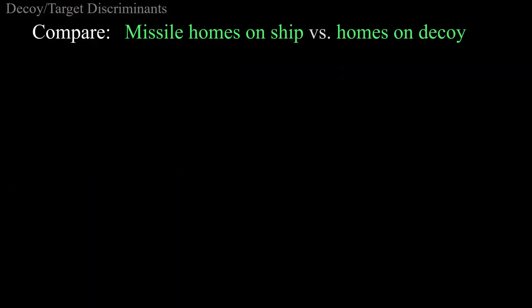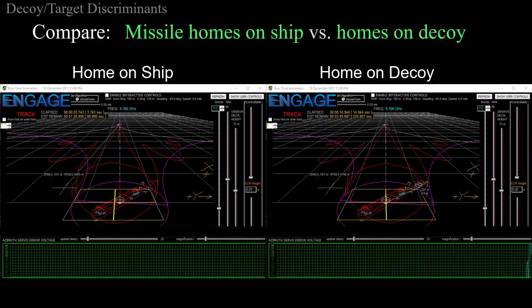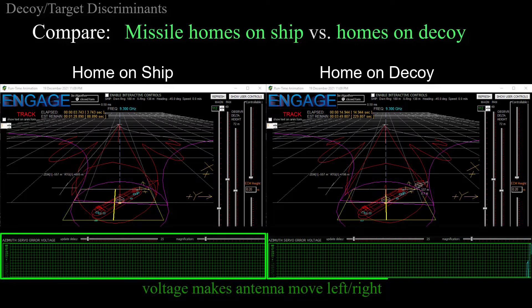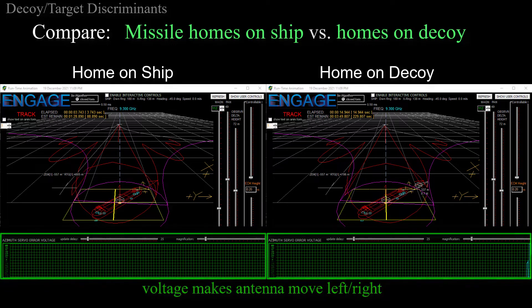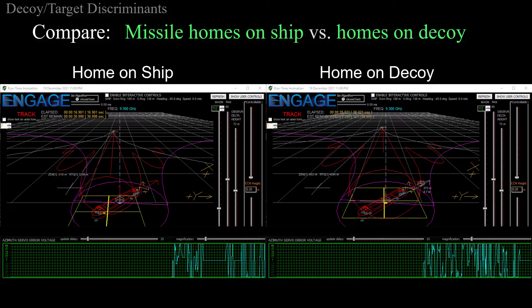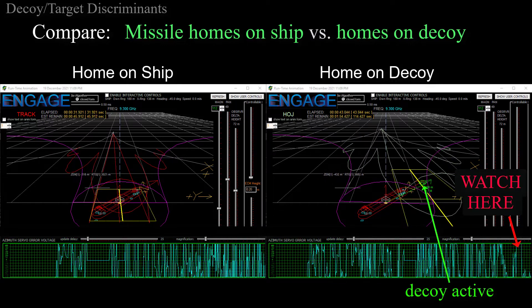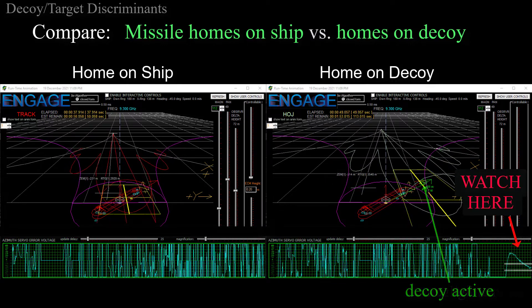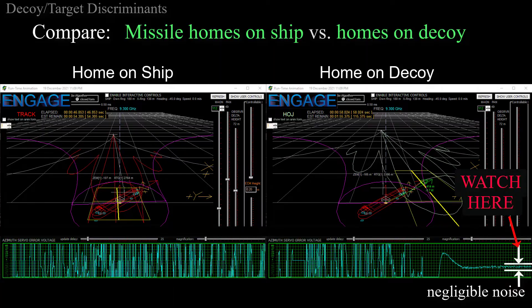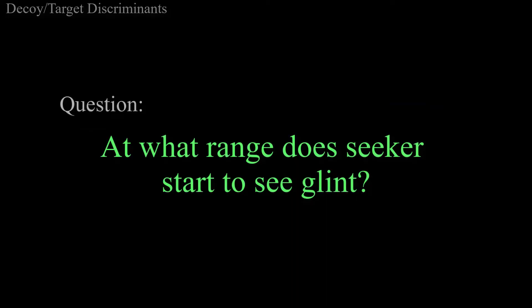Here is a side-by-side comparison of the glint target discriminant as seen by the missile. On the left side, the missile homes on a ship. On the right side, an active decoy. As before, the seeker error voltage scrolls along the bottom of each animation. This is the voltage that drives the seeker antenna azimuth position during tracking. Now in both cases, the seeker is initially tracking the ship, so the error signals are both noisy. The decoy becomes active after four seconds, and the noise on the error voltage almost completely disappears, indicating that it is, in fact, a decoy.